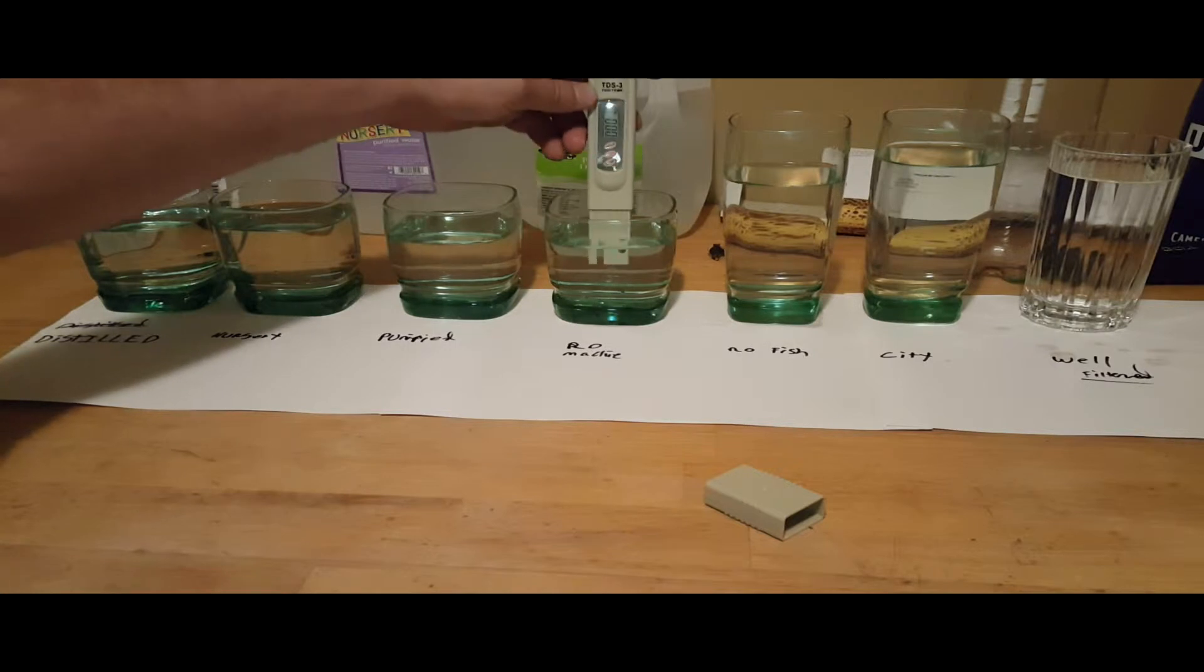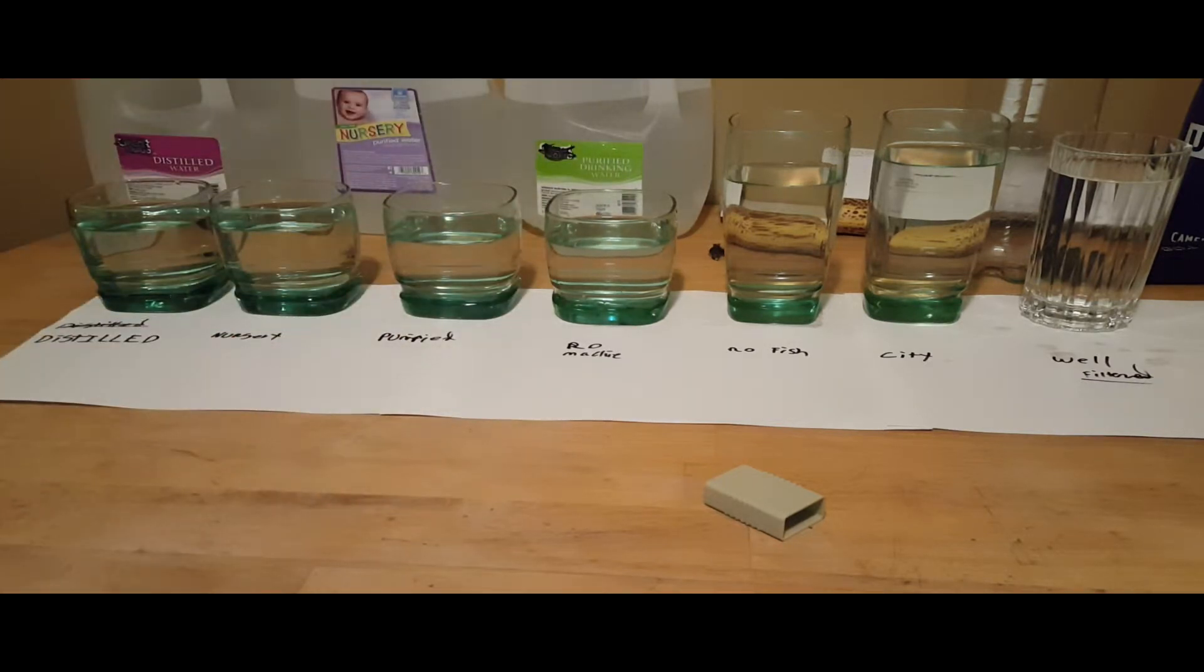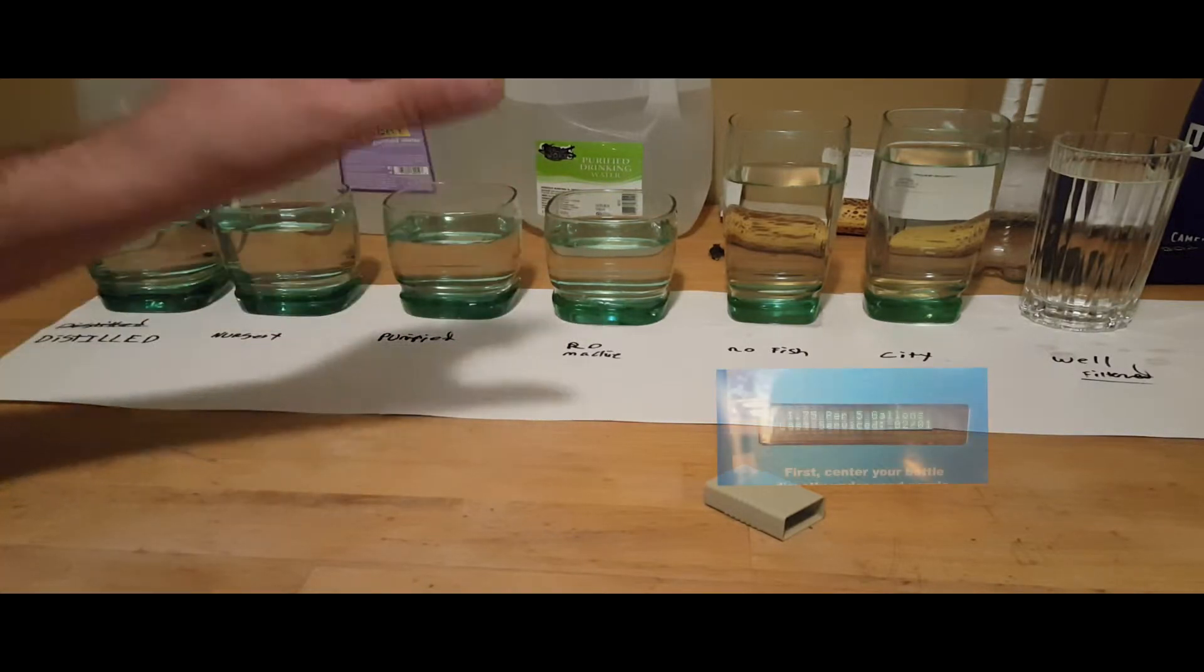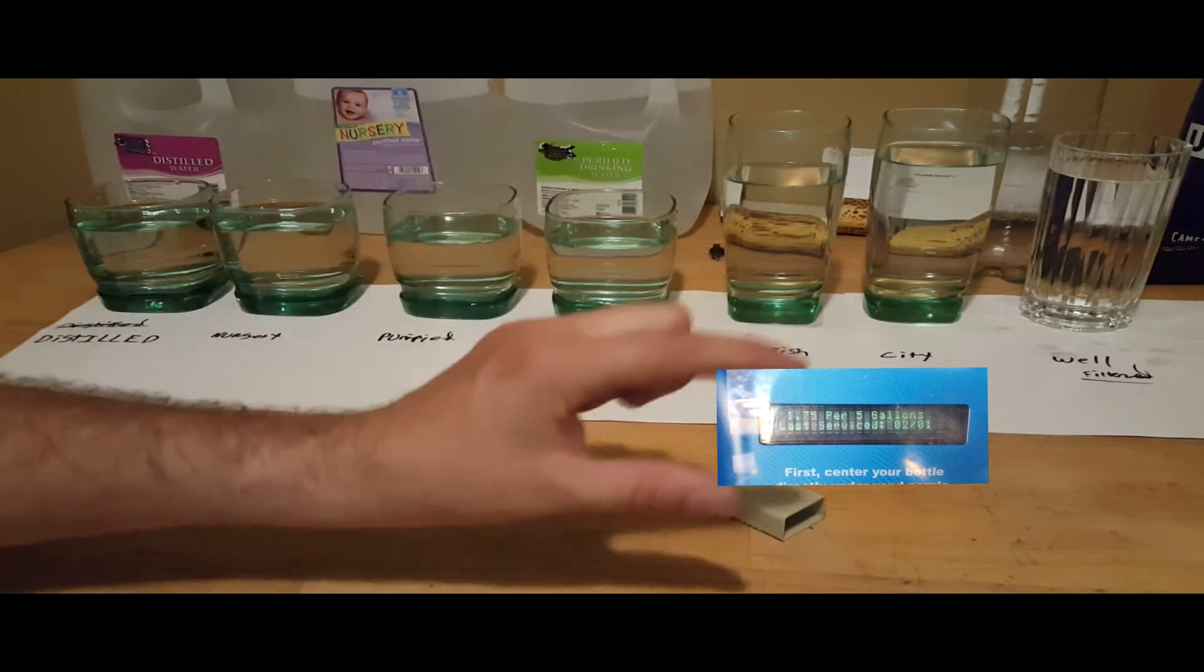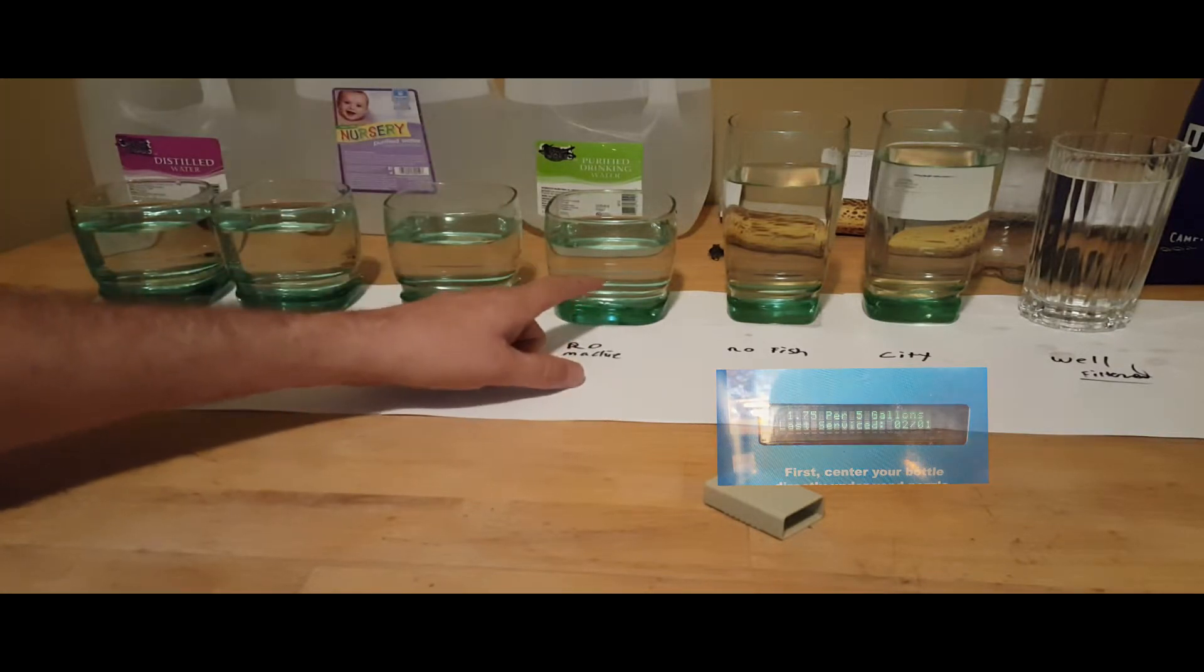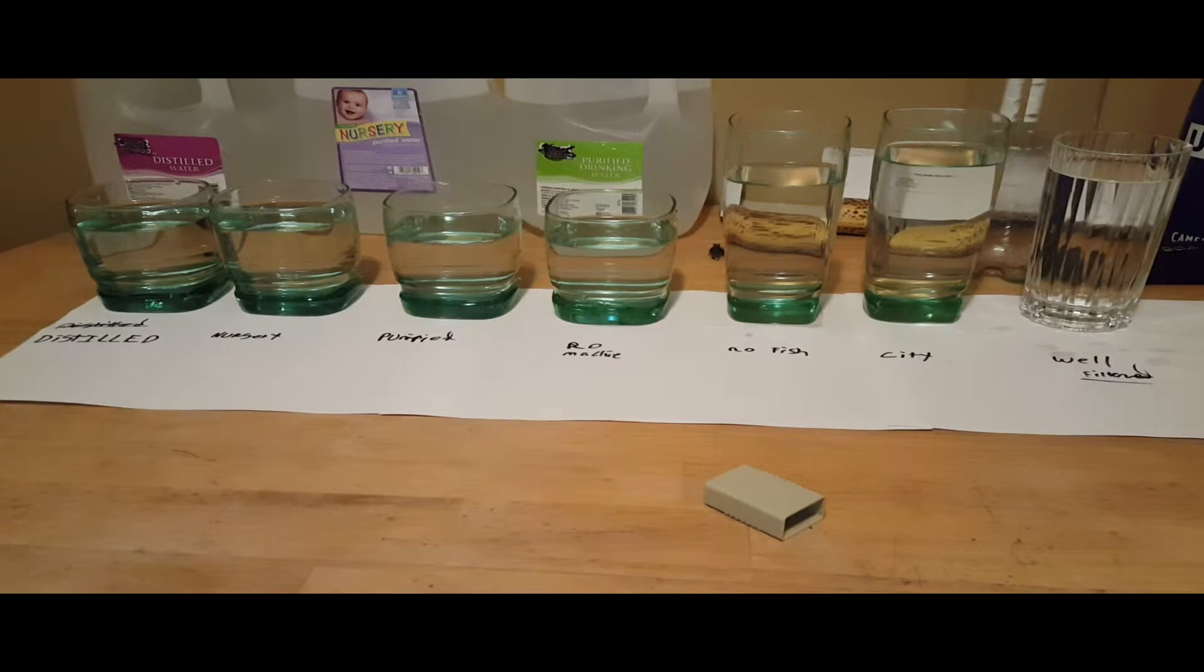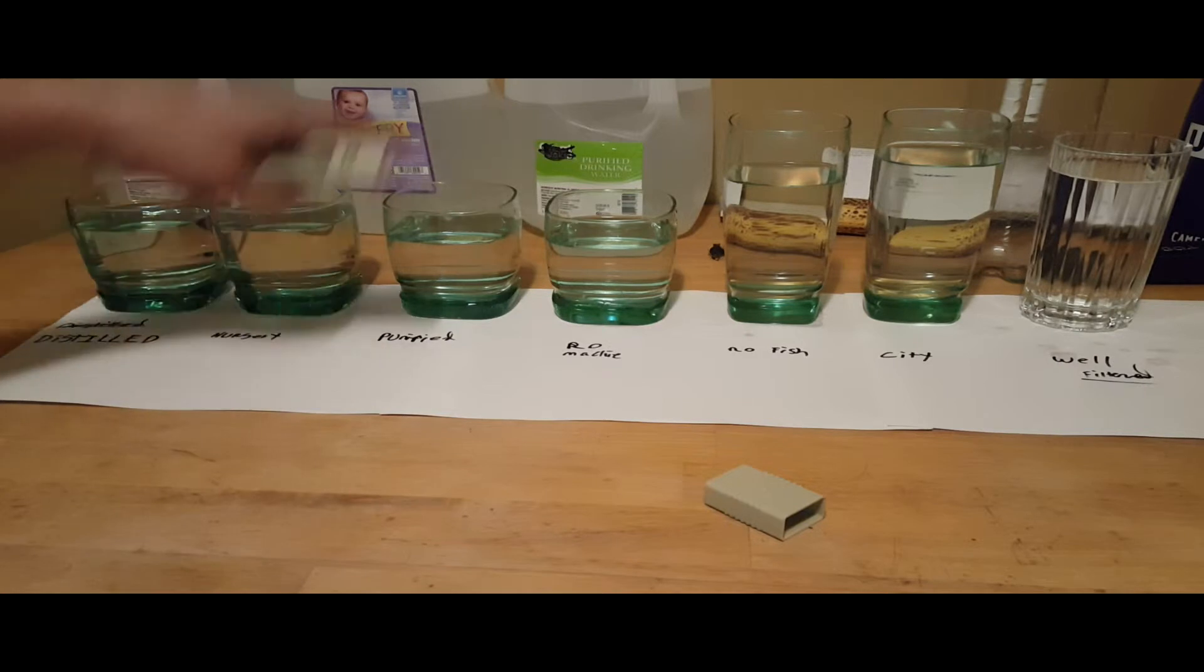Next we move over to the RO out of the machine, this is the glacier water. This one is 5 TDS, a little bit better than the fish store. This one happens to have had the filters changed at the beginning of the month. I did take a picture of the machine with the date, so I'll put that somewhere in the video so you can see what you're looking for when you go to those machines.